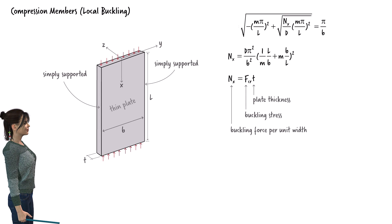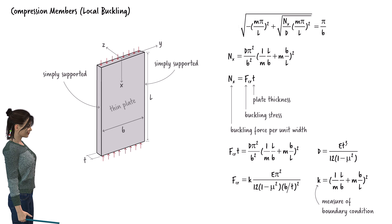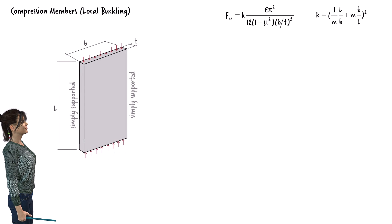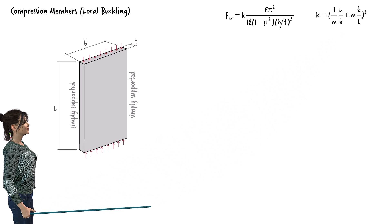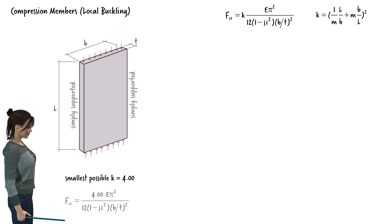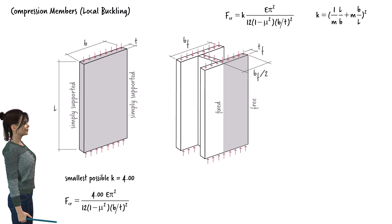Where F_cr is buckling compressive stress and t is the thickness of the plate. Substituting D, our equation simplifies to F_cr equals a function involving k — where k is a coefficient that defines the plate's boundary conditions. For example, if the plate is simply supported along both edges parallel to the direction of the load, regardless of b and l, the smallest value for k becomes 4. If the plate is fixed along one edge and free along the other — as with half a flange of an I-shaped column — the smallest value for k is 1.277.